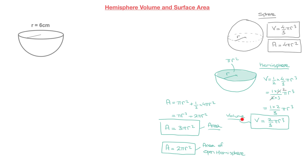Now that we have the formulas for the volume of a hemisphere, the total surface area, and the area of an open hemisphere, let's calculate each of those three results for the hemisphere shown here. Starting with the volume, remember the formula is V = 2/3 π r³. Since this hemisphere has a radius r = 6 centimeters, all we have to do is replace r by 6, giving us 2/3 × π × 6³.